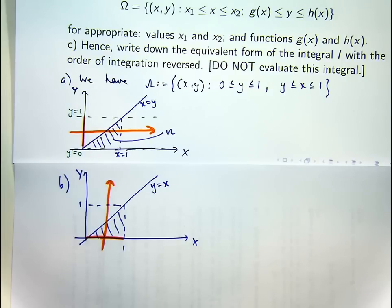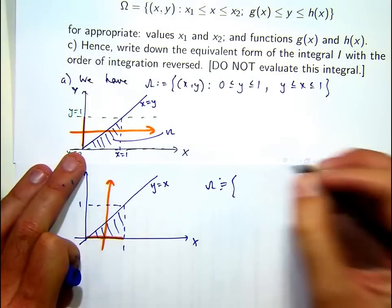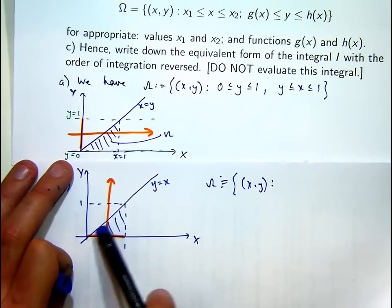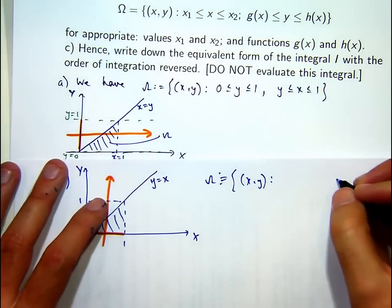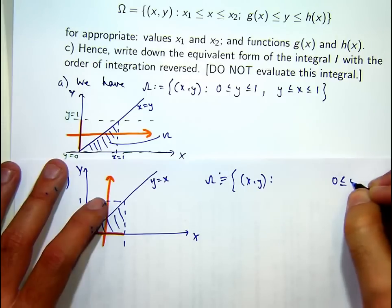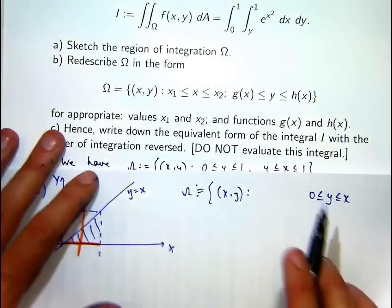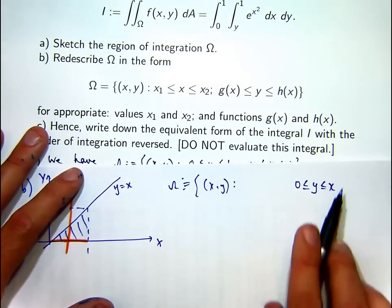Well, it enters the region at the line y equals 0. And it leaves the region at y equals x. So 0 and x are your y bounds. Okay? So that, so here, g of x just would be identically equal to 0. H of x would be x.